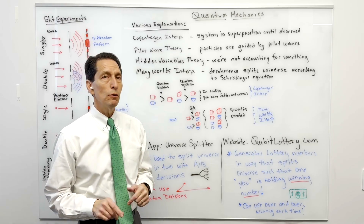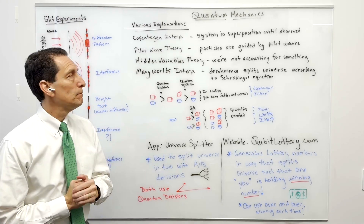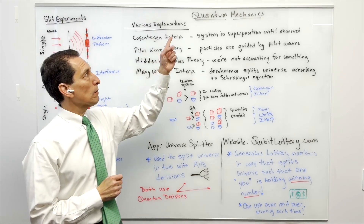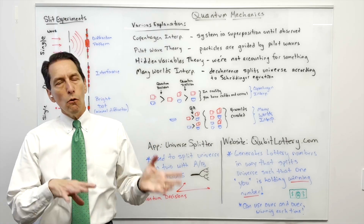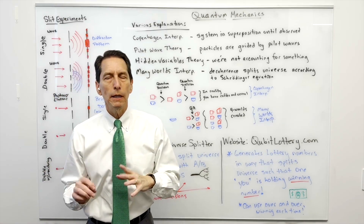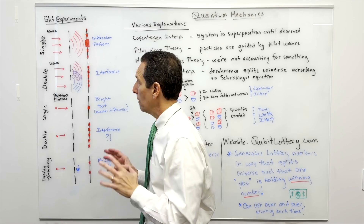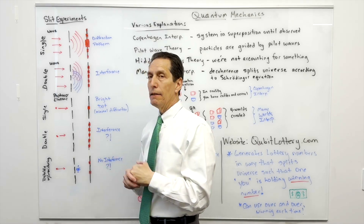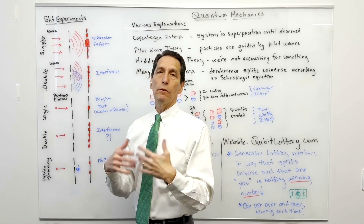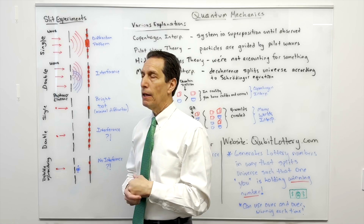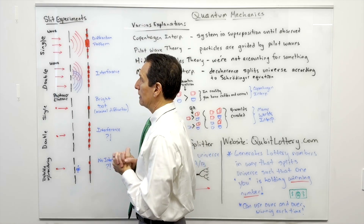Today is part two of my science series. We're going to talk about quantum mechanics. We have to start by going back in time a little bit and talk about some observations that were made — this sets the stage for why some theories were developed and what those theories mean.